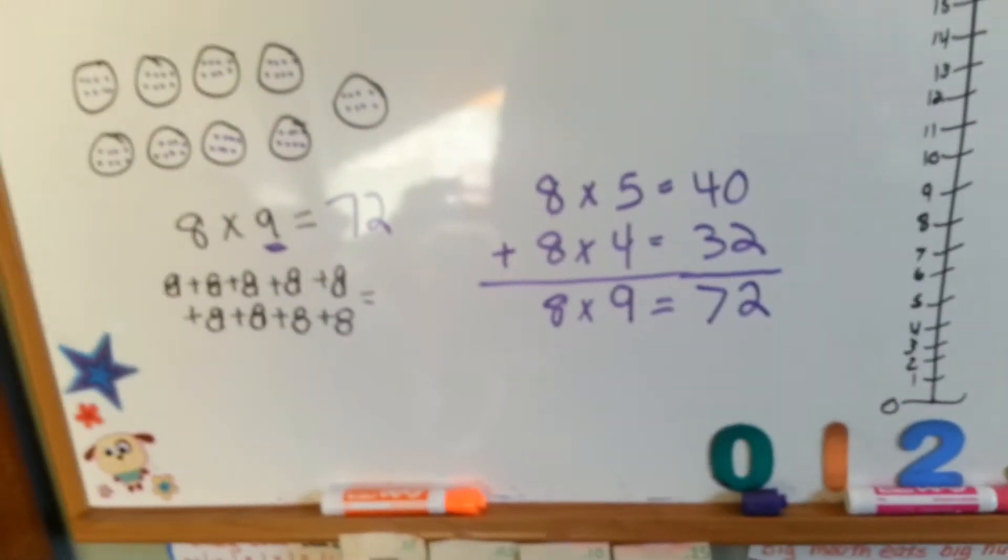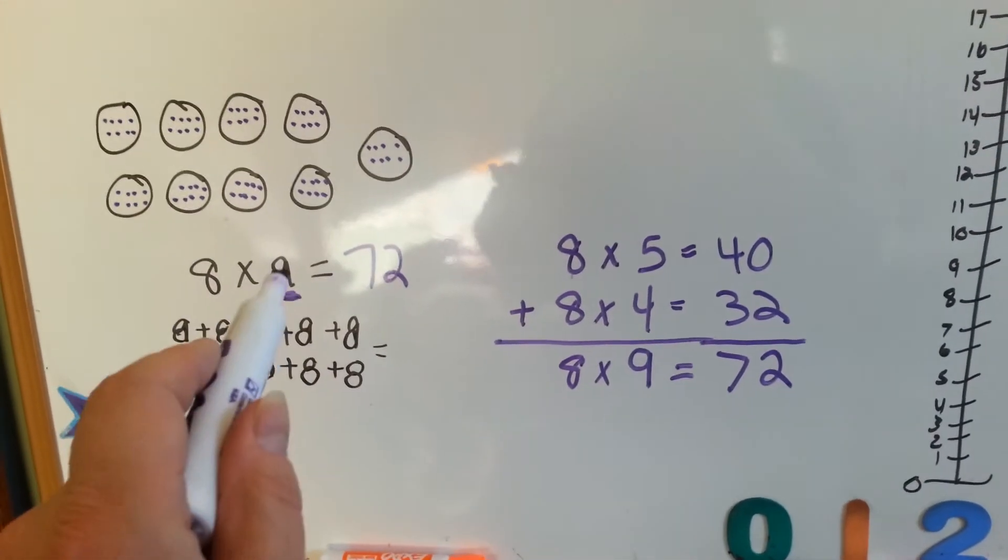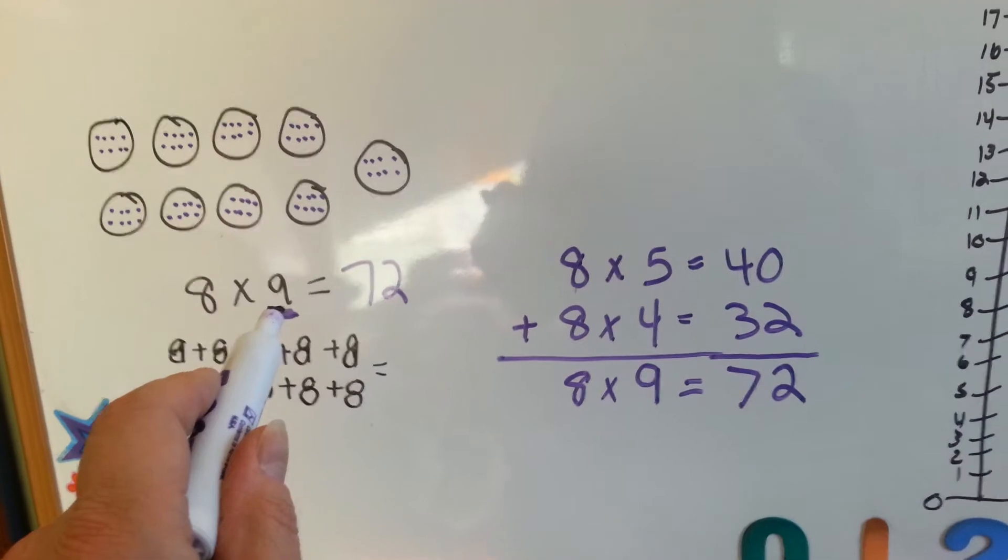So sometimes when you're stuck with a really big times table problem, try breaking one of the big numbers into pieces.